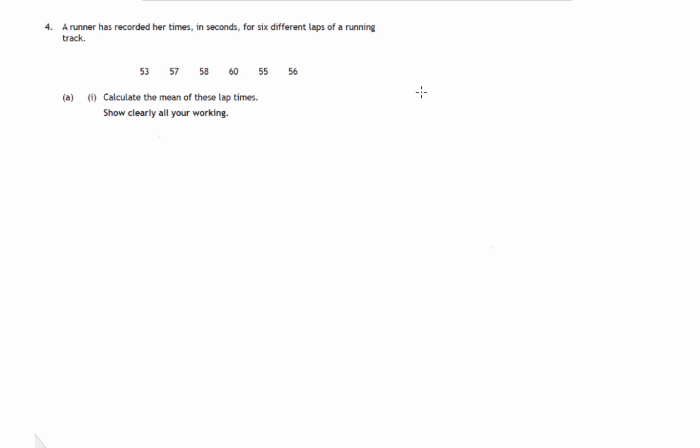So let's do that. This is part 1 and we're working out the mean x bar. So the mean is the sum of these: 53 plus 57 plus 58 plus 60 plus 55 plus 56. And we have to divide by the number of data that we have, which is 6.